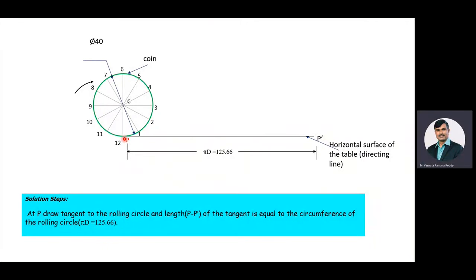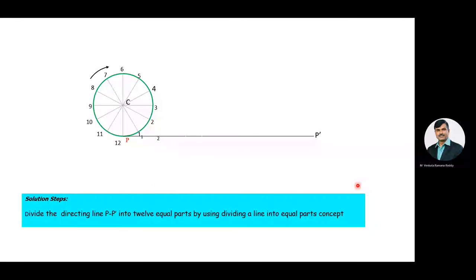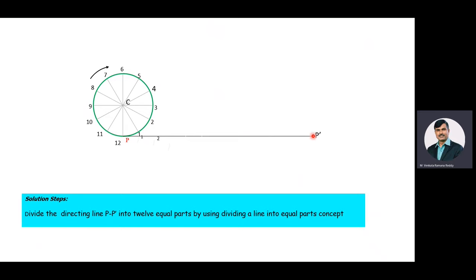Now divide the directing line P to P' into 12 equal parts. We divide it into 12 parts because the rolling circle is also divided into 12 equal parts and P to P' equals the circumference of the rolling circle. We use the acute angle line method to divide the directing line into 12 equal parts.